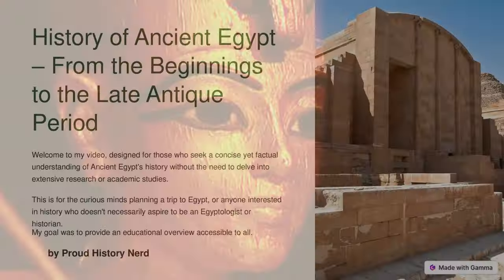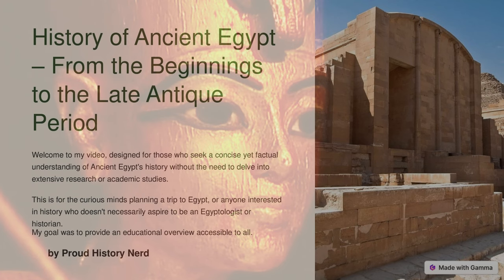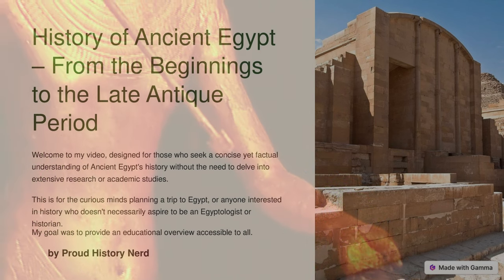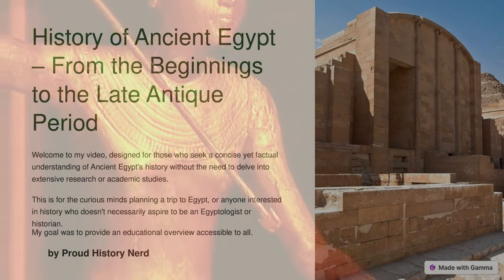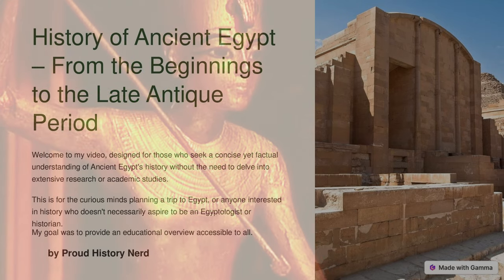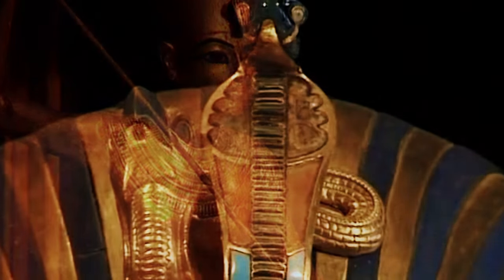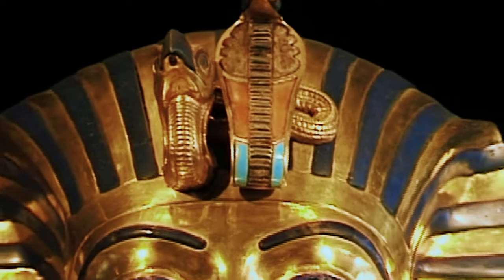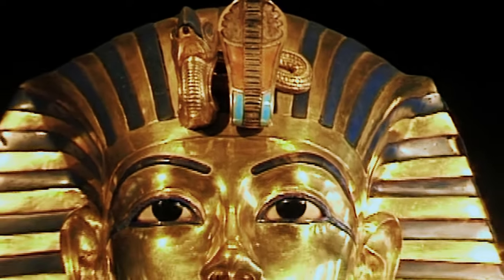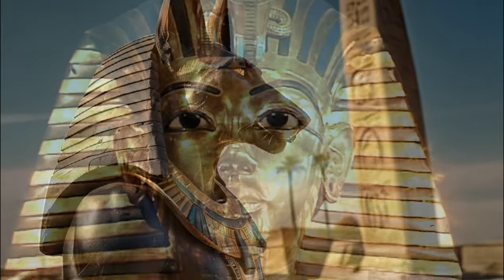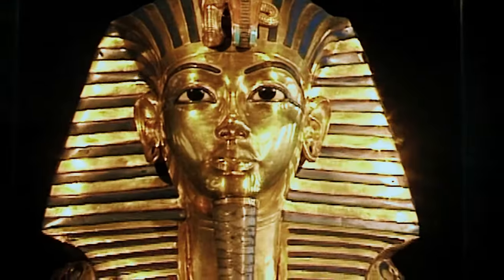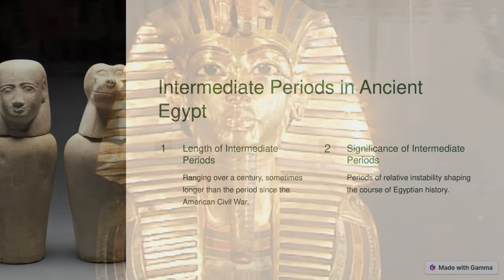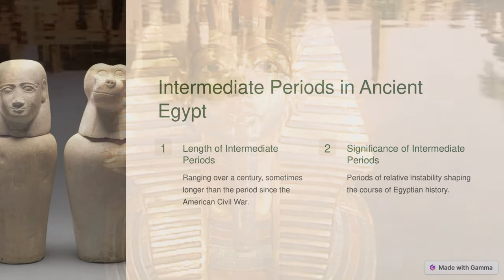In this video, we should first acknowledge the incredible length of ancient Egyptian history. To put it in perspective, Alexander the Great's conquests, though ancient to us, are closer in time to our present day than to the founding of Egypt's first dynasty. This vastness necessitates a simplified narration, as we consider that a generation today spans about 30 years, while lifespans were much shorter in ancient times. We'll also examine the concept of intermediate periods in Egyptian history, which often span over a century.